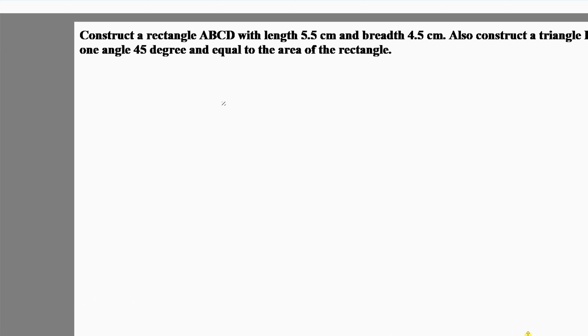Hi again, warm welcome. Our question is to construct a rectangle ABCD with length 5.5 centimeters and breadth 4.5 centimeters, and also construct a triangle EBF having one angle of 45 degrees and equal area to the rectangle. This is a combined construction where we need to construct two geometrical figures — a rectangle and a triangle — with equal area.